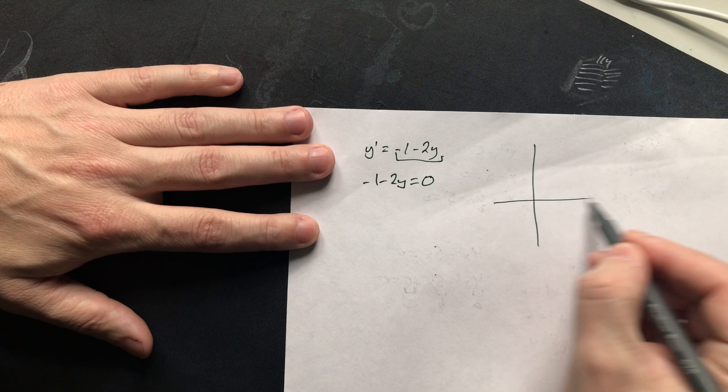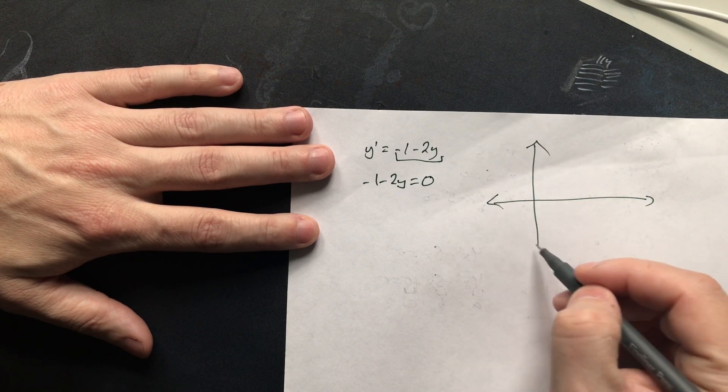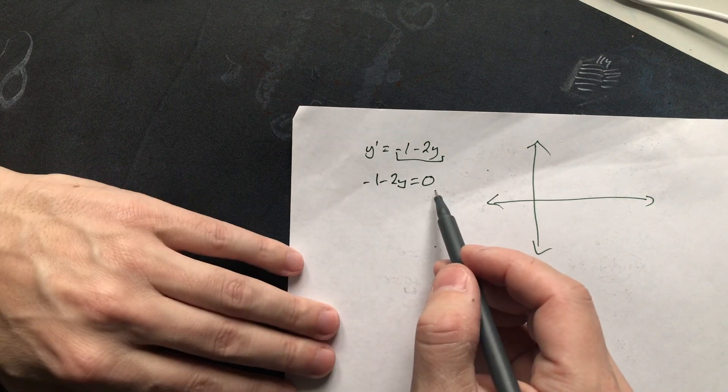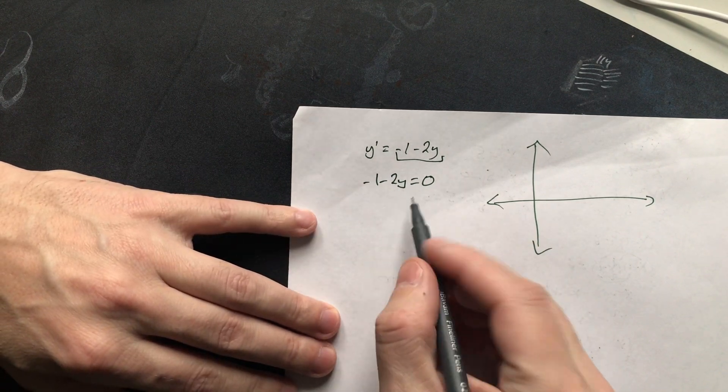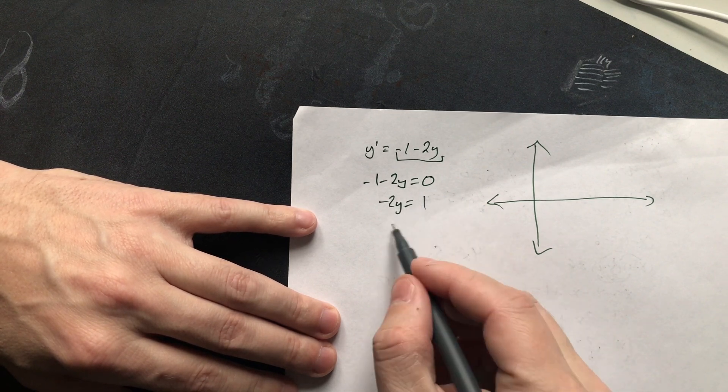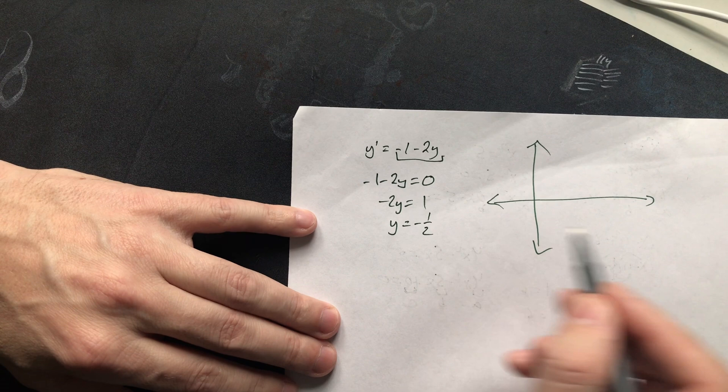All right, and then draw this like this. Now just solve this for y. This will tell you where is the slope equal to 0, the value of y that makes it true. So that's going to be negative 2y equals 1. Divide by negative 2, so you're going to have y equals negative 1 half.